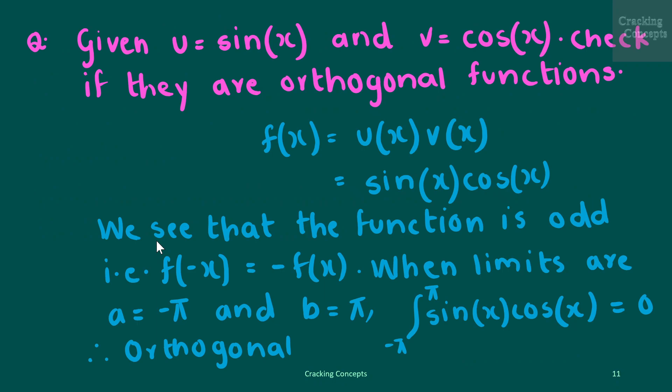In this question we are given two functions sine and cosine and we need to check whether they are orthogonal or not. The product f can be written as u times v, which is sin(x) times cos(x). We see that this function is odd, meaning f(-x) equals -f(x), and when the limits are defined from -pi to pi this integral evaluates to zero. Thus we can see that both these functions are orthogonal.